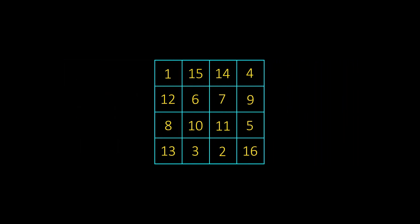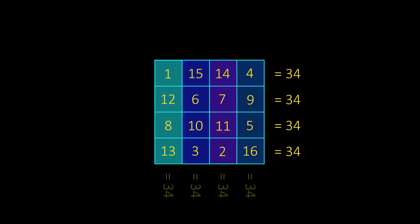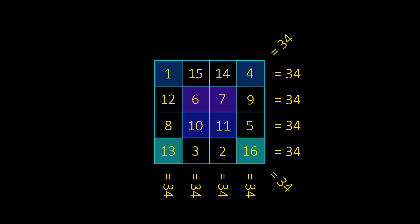A magic square is a square array of natural numbers so that the sum of numbers in each row, column, or diagonal is the same.